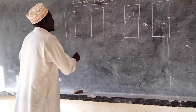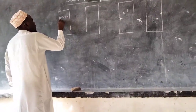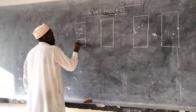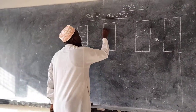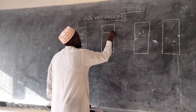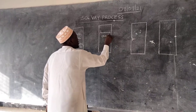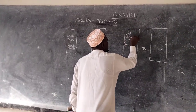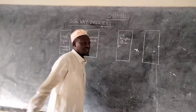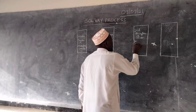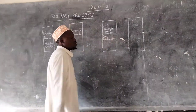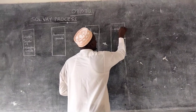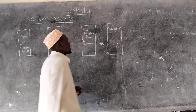The first tower is called the Solvay tower, also called the first absorption chamber. The second one is called the ammonia generator. The third one is called the carbonate generator. The fourth one is called the second absorption tower, also called the carbonator. And there is also the limestone kiln, or calcium carbonate kiln.